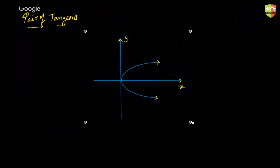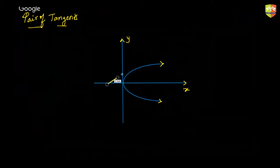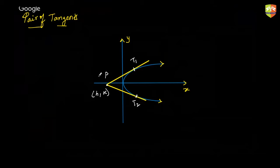The next concept is the pair of tangents. From a point external to a parabola, you can always draw two tangents. If this point is (h, k) and you draw two tangents PT₁ and PT₂, the combined equation of these two tangents is called the pair of tangents. Just as we learned in circle, the combined equation is given by T² = SS₁. Nothing changes even in the case of a parabola.